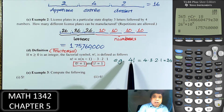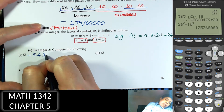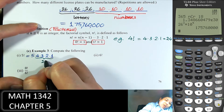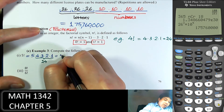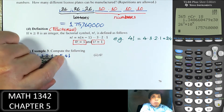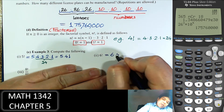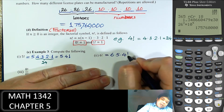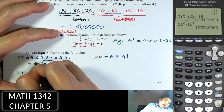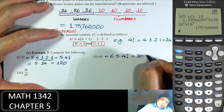So, the exclamation point means we go back down to one. 5 factorial is 5 times 4 times 3 times 2 times 1. We already computed 4 factorial as 24, so 5 factorial is 5 times 24, which is 120. Similarly, 6 factorial is 6 times 5 times 24, so 720. On the calculator, you hit the number, then go to Math, Probability tab, option number 4.